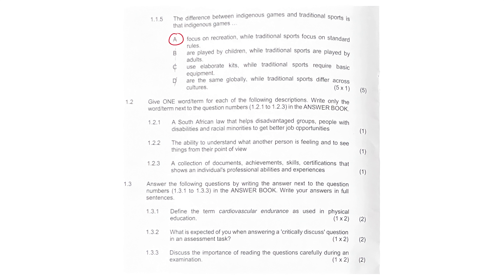1.2 — give one word or term for each of the following descriptions. South African law that helps disadvantaged groups — my business kids, I hope you guys got this — it's the Employment Equity Act, the EEA. 1.2.2, the ability to understand what another person is feeling and to see things from their POV — it's all about putting yourself in their shoes — that's going to be empathy. If it was just feeling sorry for them, that would have been sympathy. 1.2.3, a collection of documents, achievements, skills, certifications that you apply with — that's going to be your CV. The covering letter is like that little love letter that you send your employer.